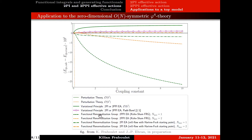For the 2PPI effective action via the FRG, the results are a little disappointing, but it enables in principle designing a DFT whose results are systematically improvable. When the FRG for the 2PPI effective action is formulated such that the flow starts at the Hartree-Fock theory, we get excellent results: the relative error at the first non-trivial order is around two percent even in the strongly coupled regime, and this is reduced to 0.25 percent at the second non-trivial order.